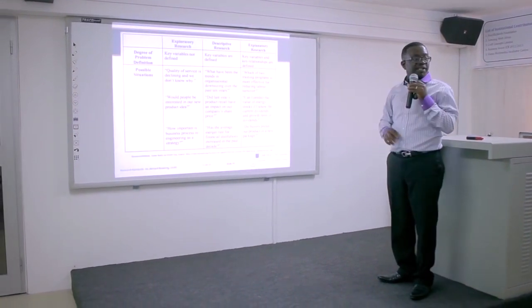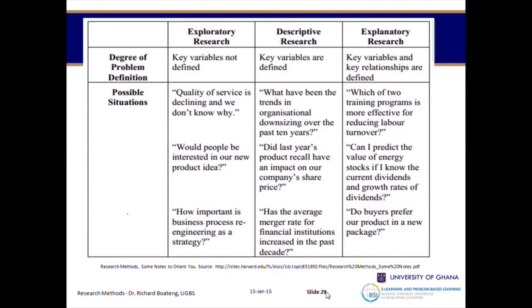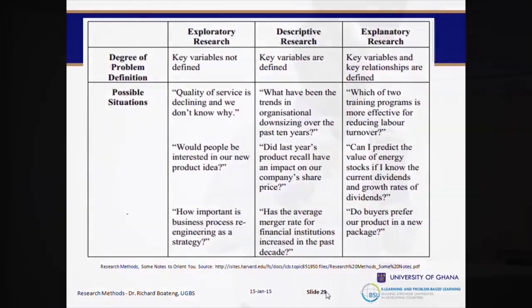In exploratory research, key variables are not defined — it just gives insight and touches the surface. In descriptive research, you are able to establish, for instance, these are the attitudes. In explanatory research, you look at variables and the relationships — why do people exhibit this attitude? Why is it that students who go to a particular university are the only ones sharing books in this particular community library? Why is it that children under 15 years old like coming to the library after 2 p.m.? It's establishing relationships about observations found in exploratory or descriptive research.